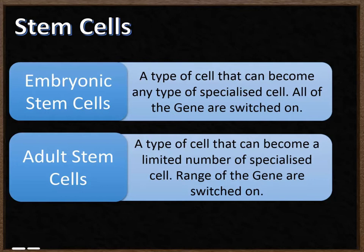The second type of stem cell is an adult stem cell. This is a type of cell that can become a very limited number of specialized cells. That's because a range of genes are switched on, but the vast majority are switched off.